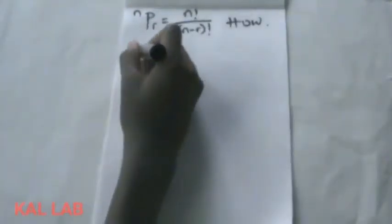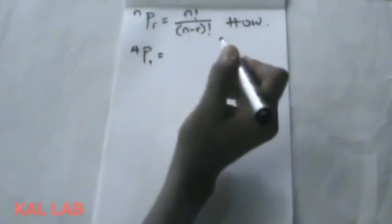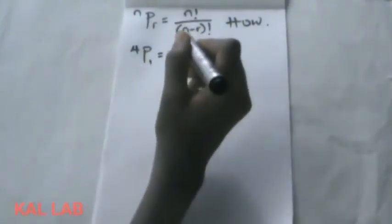n permutation r is equal to n factorial over n minus r factorial. But how, how did they get this formula? How did they arrive at such derivation? Of course we know that for permutation 1 means...